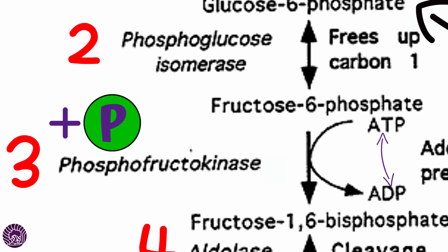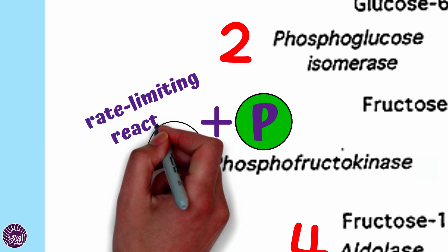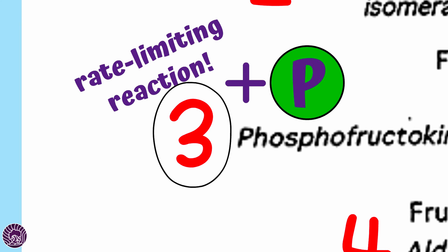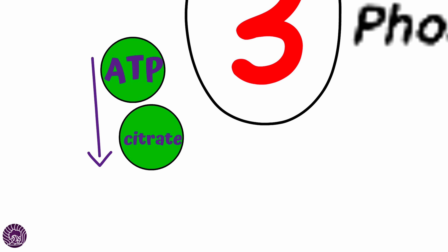Glycolysis can also use glycogen. We can take a glucose molecule from our stored muscle glycogen and bring that into glycolysis, which enters at step two of the process — really important to remember. So we can use glucose or glycogen. Step one is controlled by the enzyme hexokinase, and this is where we convert glucose to glucose-6-phosphate. In order to do that, we need to take a phosphate from ATP, so we're actually using an ATP molecule here rather than making one. After step one, when using glucose, we're down one ATP — a net loss.